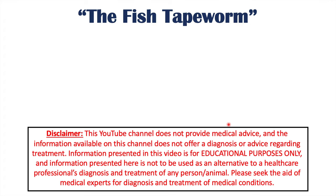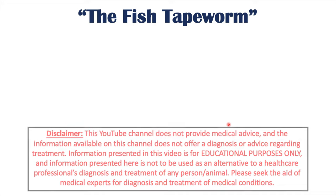Hi everyone. We're talking about how people get infected with tapeworms from consuming raw or undercooked fish. We're going to talk about the tapeworm species that cause infection, how they infect the patient, the signs and symptoms of an infection, how these infections are diagnosed, and how they're treated and prevented.